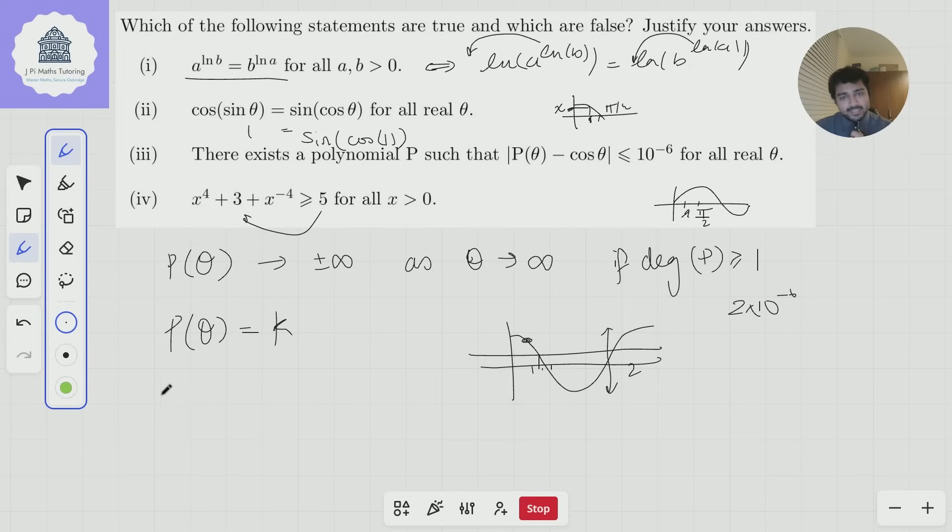Well, this inequality is true if and only if x^4 - 2 + x^(-4) ≥ 0. And this might look familiar. This is, in fact, if I multiply this by x^4.